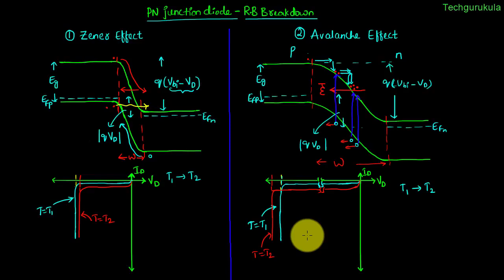Before wrapping up, let me address a common misconception: the breakdown phenomenon is not inherently damaging to the P-N junction diode. It's not the breakdown itself but the current flowing because of it that can damage the diode. A P-N junction has a maximum rated reverse current, and if we can ensure the current stays within that limit in a circuit, the diode can be safely operated in the breakdown region. In fact, Zener diodes — which we will see in special diodes — are actually designed to be used right in the breakdown region.